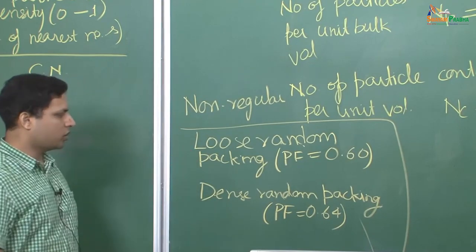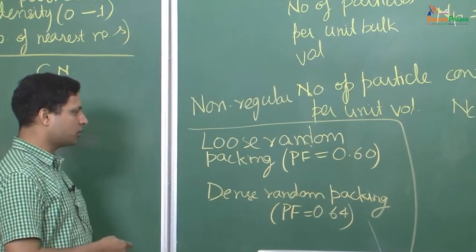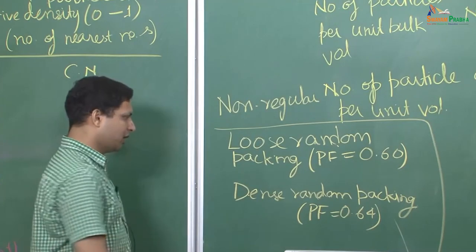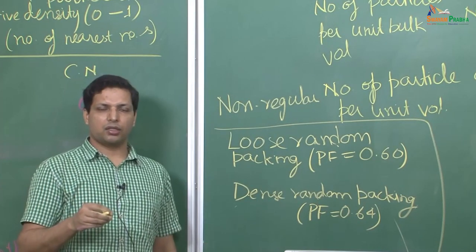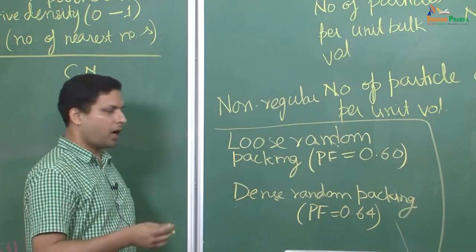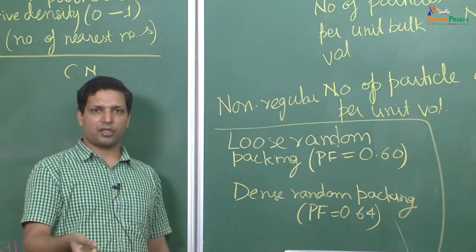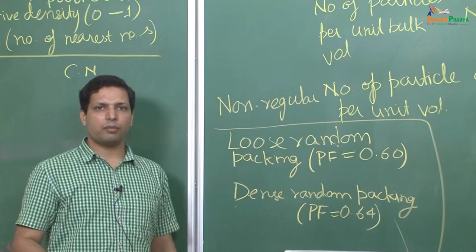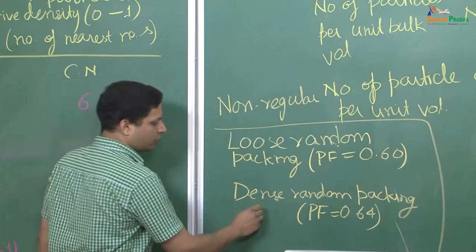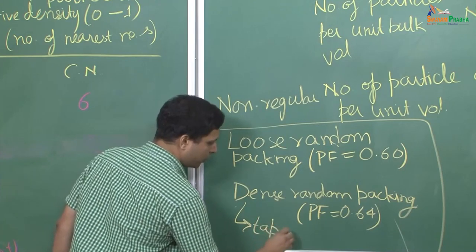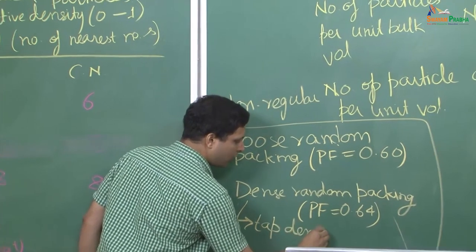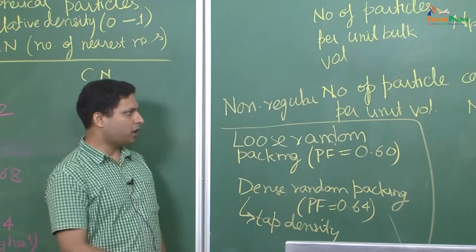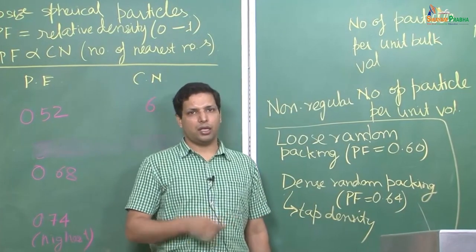These two — loose and dense random packing — are the most commonly observed cases. Loose random packing is when powder is simply poured in without tapping. Dense random packing is when the powder is tapped, causing the overall volume to reduce — related to what is called tap density. We will continue our understanding of powder consolidation in the next lecture.